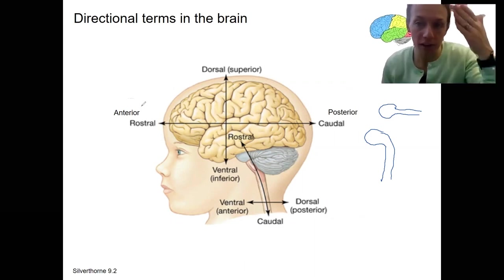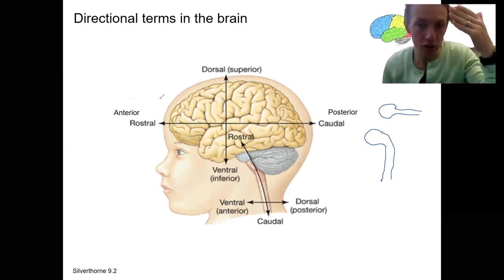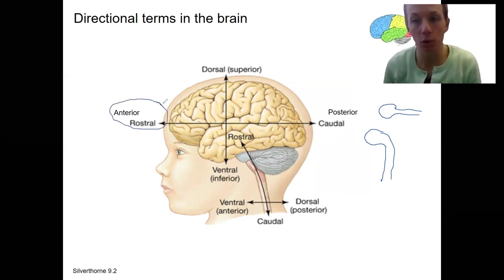So for the front of the brain, the front is the anterior. In the brain, that's also called rostral. Rostral means forward, just like anterior means front.